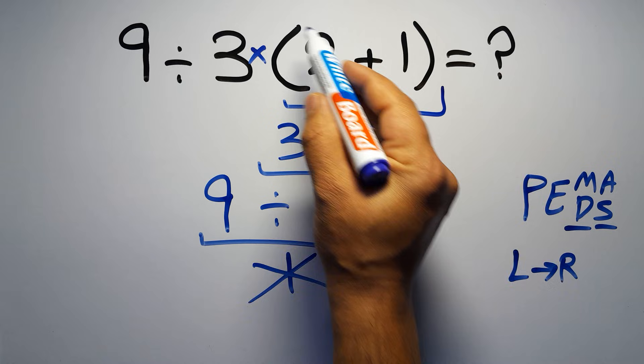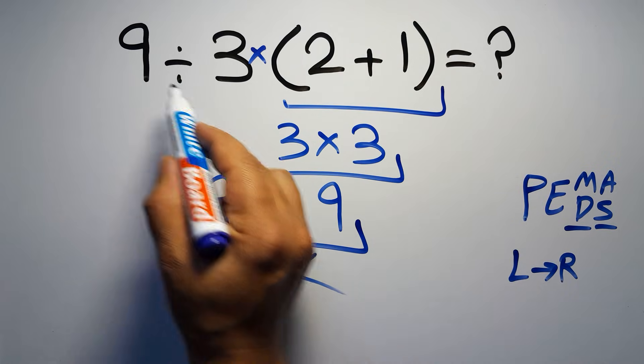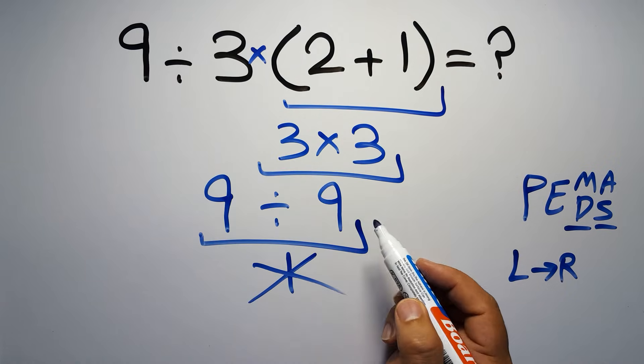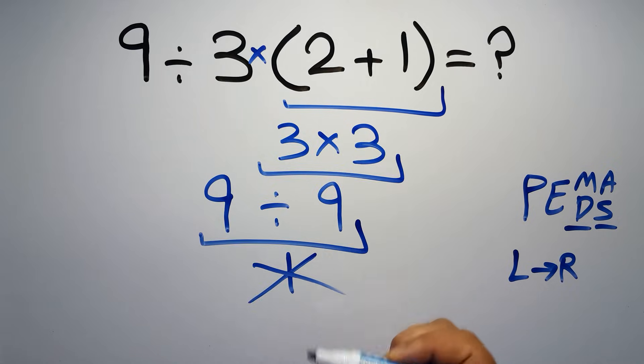So according to PEMDAS, first we have to do this parentheses, then this division, and finally this multiplication. If we do this multiplication before this division, it is wrong.